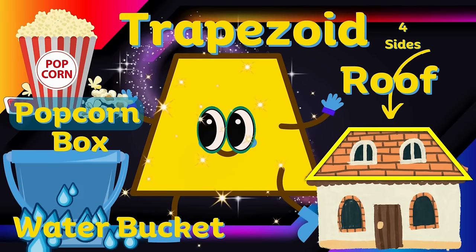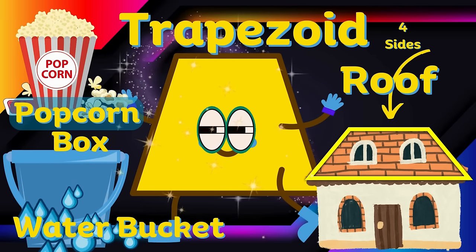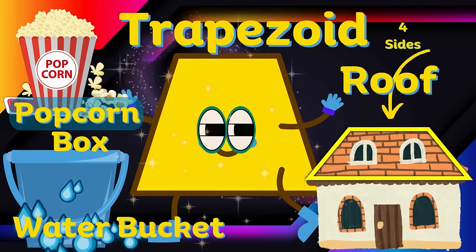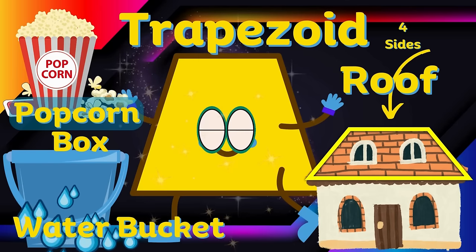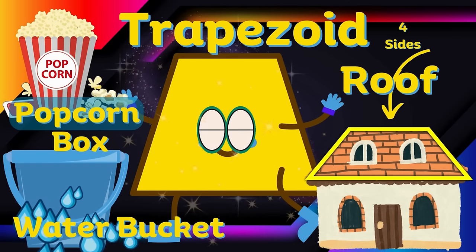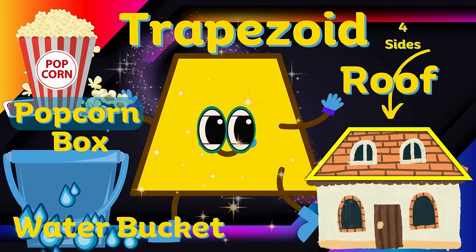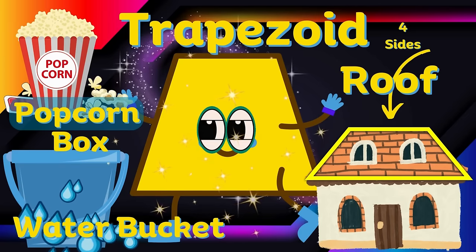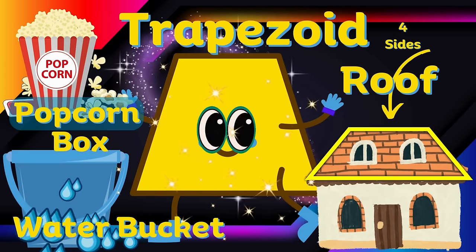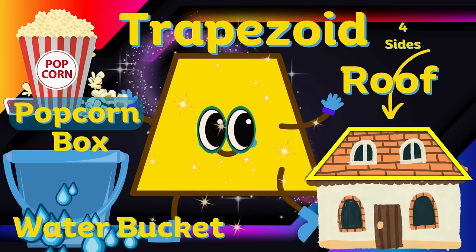Trapezoid. T-R-A-P-E-Z-O-I-D. Trapezoid. A trapezoid has four sides. Popcorn box, water bucket, roof. Trapezoid.